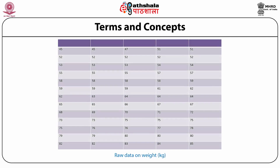Array is the arrangement of numerical data in ascending or descending order of magnitude, as shown in Table 3 where the weight of 65 adult males is presented. The range is the difference between the highest and the lowest value of a variable. From Table 3a, the range derived is 45 to 85, with a difference of 40, where the lowest value is 45 and the highest is 85.